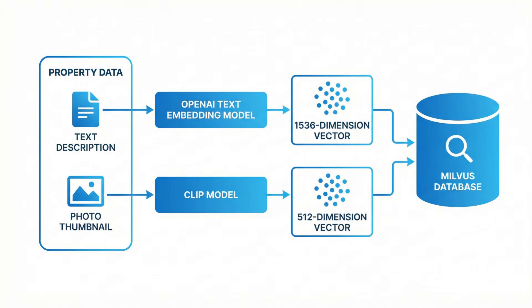Here's the breakthrough. Vector databases like Milvus don't just store text or images directly — they store meaning as numbers. These are called embeddings. They capture semantic meaning in mathematical space. Similar meanings get similar numbers, and Milvus can search billions of these in milliseconds.